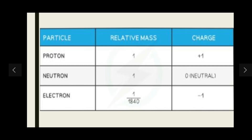Before moving to the next concept, let's discuss the location of these subatomic particles. Protons and neutrons are always found inside the nucleus — they are fixed at the center of the atom. Electrons, on the other hand, are found in shells and they orbit the nucleus. They move in orbitals, essentially hovering randomly around the nucleus like a fly hovering around in the street.